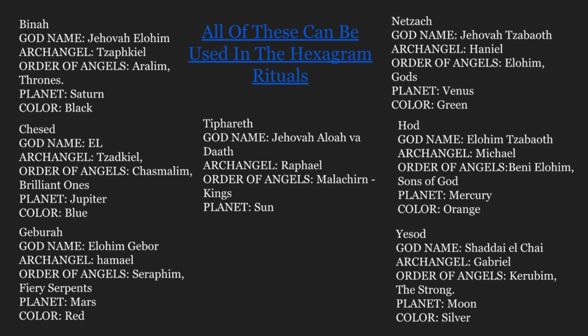Basically with these spheres, the best way to explain it is: you have first the essence or god name of that sphere, then the archangel, then the orders of angels, and then the planet. Saturn, Jupiter, Mars, and Venus are also all god names.